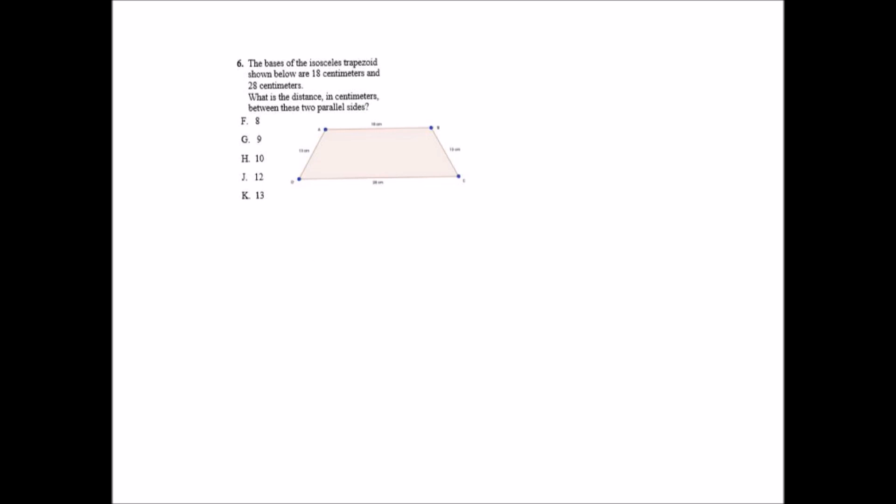Question 6 says the bases of the isosceles trapezoid shown below are 18 centimeters and 28 centimeters. And what they want to know is what is the distance in centimeters between these two parallel sides? Well, if you look at that, that's also going to be the height of one of these imaginary triangles down here. If only we knew the base of this triangle, we have the base, we have one of the sides, and we don't know this side, but we do know this side over here to be 13 centimeters.